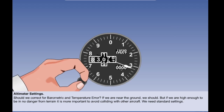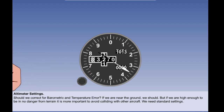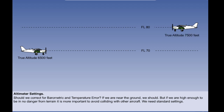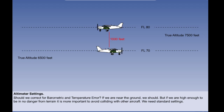We have a procedure to deal with this. Once safely away from high ground, both aircraft set 1013 as a datum and do not make any correction for temperature. We call this flight levels. This aircraft is told to fly at flight level 70, meaning 7,000 feet on 1013. This one is told to fly at flight level 80, meaning 8,000 feet on 1013. It may be that because of barometric and temperature error this aircraft is really at 6,500 feet true altitude, but if so, the other will be at 7,500 feet. They are in the same part of the sky, experiencing identical errors, and will still have 1,000 feet vertical separation.